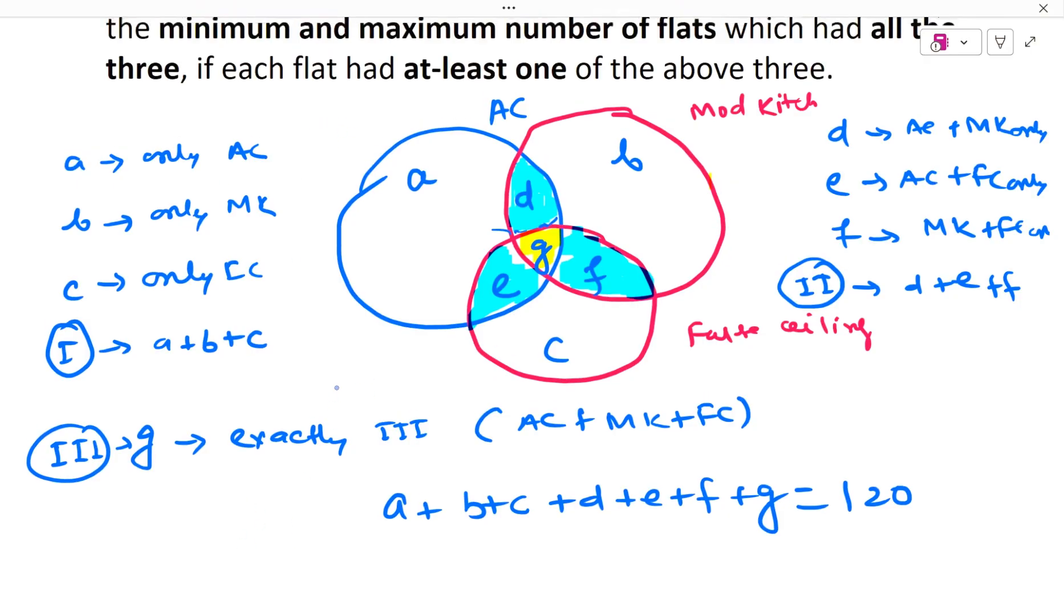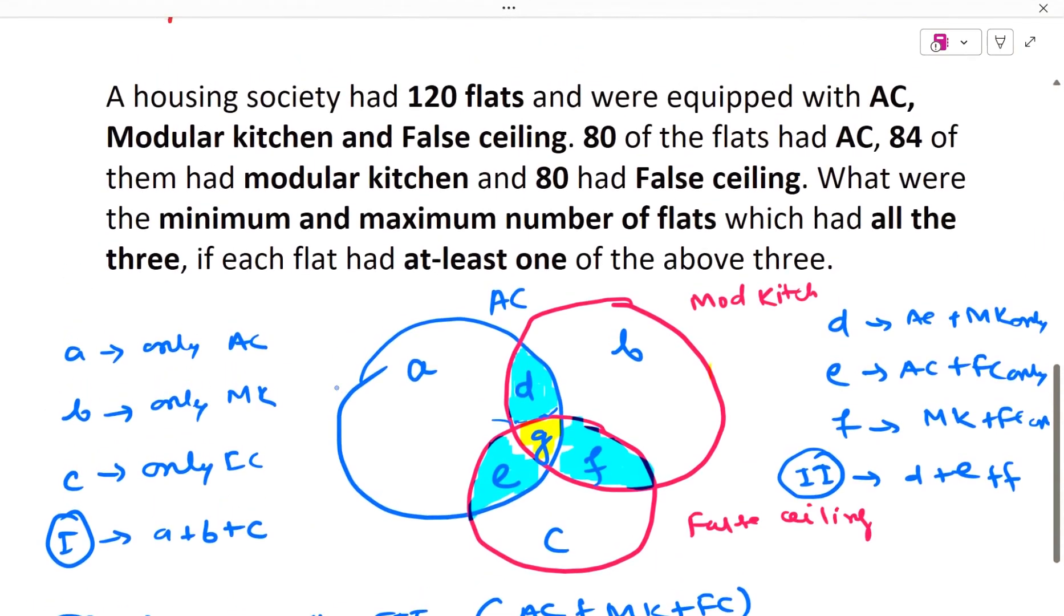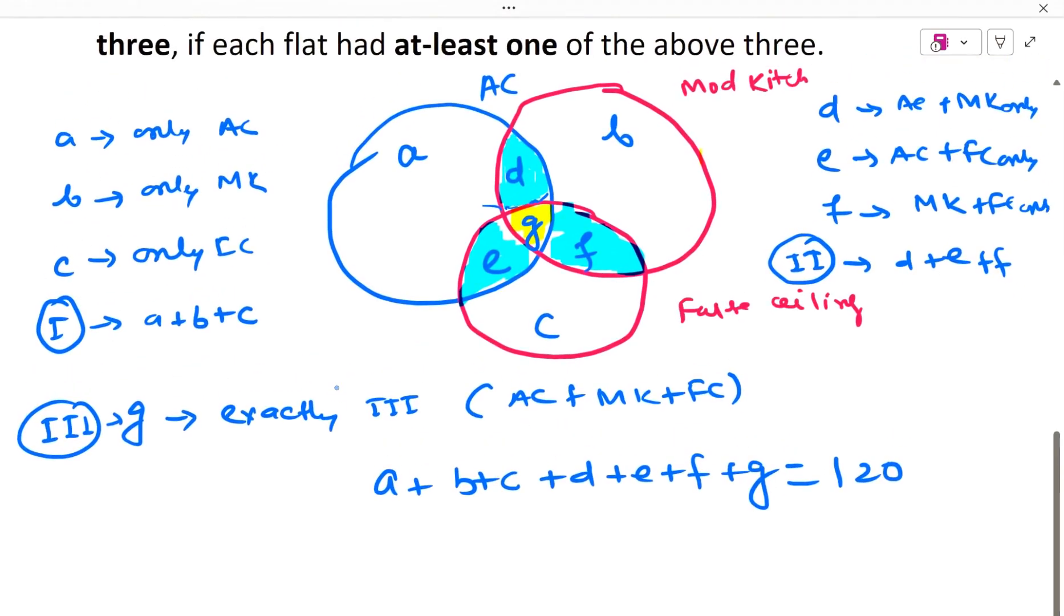Similarly, they have given that AC is 80, MK is 84, and false ceiling is 80. So AC area is what? A plus D plus E plus G. Just look at the circle of AC. So what are different elements inside it? The sum of it will be 80. So I will have A plus D plus E plus G as 80. Then I will have B plus D plus G plus F as 84. And then I will have G plus E plus F plus C equal to 80. This is for AC. This is for MK modular kitchen. And this is for false ceiling.